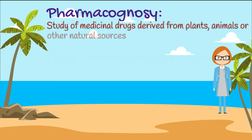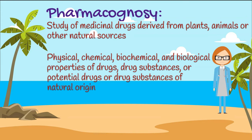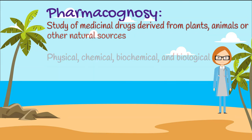The third branch is Pharmacognosy. This is the branch of pharmacy that deals with the study of medicinal drugs that are derived from plants, animals, or other natural sources. It also deals with the physical, chemical, biochemical, and biological properties of drugs, drug substances, or potential drugs or drug substances of natural origin.